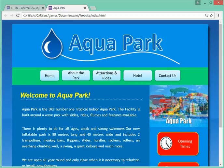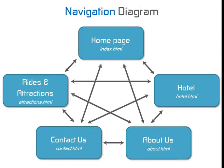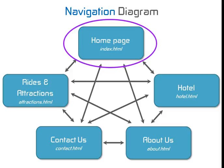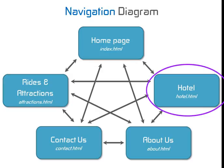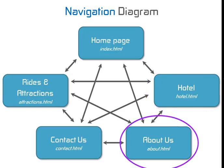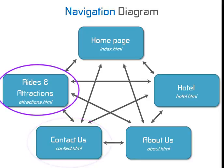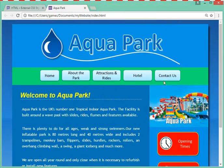Let's look at our navigation plan. Our plan is to create five pages. The home page is often called index.html, and then we're going to add a hotel page called hotel.html, an about us page called about.html, a contact us page called contact.html, and a rides and attractions page called attractions.html. The idea is that wherever you are on the website, you should be able to access every single other page, and these pages match the navigation buttons at the top.